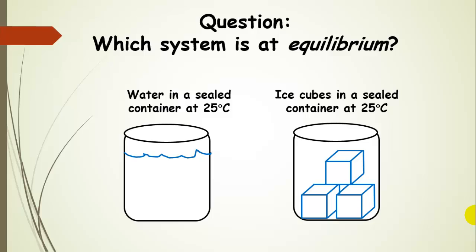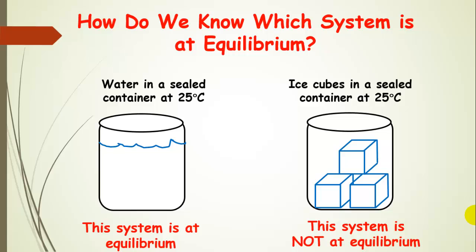We're going to compare two sealed containers. One of them has water in a sealed container at 25 degrees C, and we're assuming both containers are in a room at 25 degrees C — room temperature. The other container holds ice cubes at 25 degrees C. How would we know which system is at equilibrium?